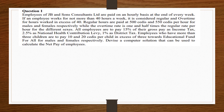Employees of JB and Sands Consultants Limited are paid on an hourly basis at the end of every week. If an employee works no more than 40 hours a week, it is considered regular. Overtime — for hours worked in excess of 40 regular hours — are paid at 500 and 550 cities per hour for males and females respectively, while the overtime rate is one and a half times the regular rate per hour for the different sexes. All employees are to pay 15% of their gross pay as income tax, 2.5% as national health contribution levy, and 1% as district tax.